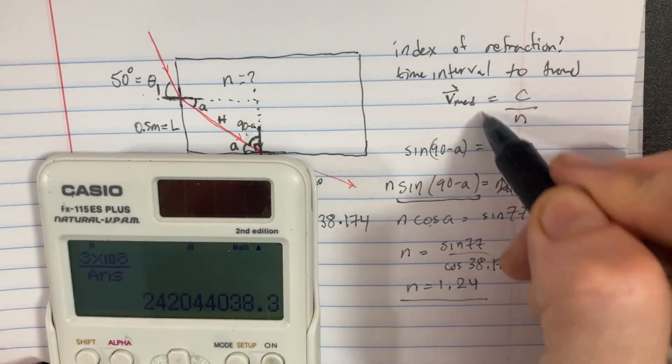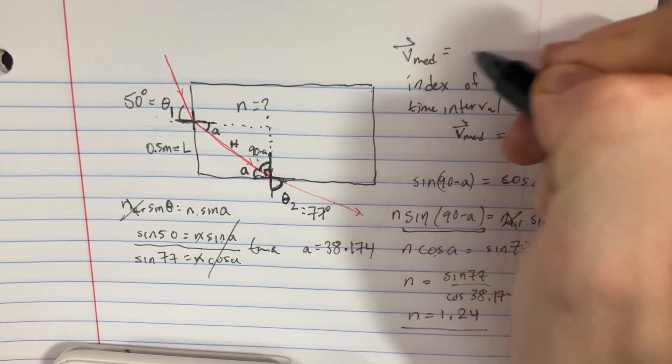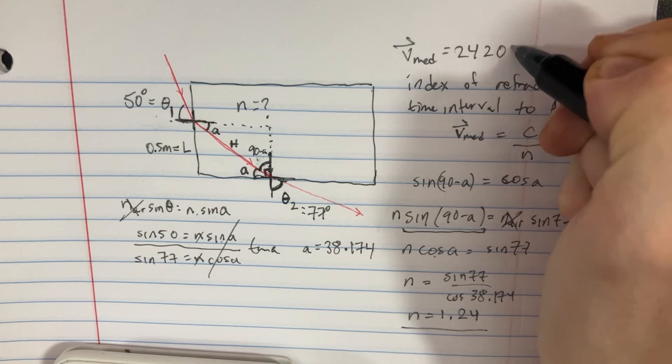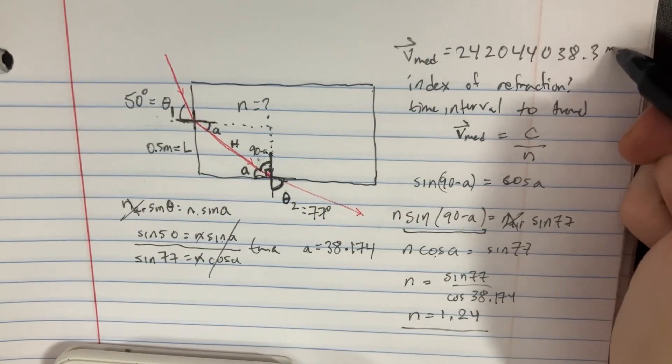So we could take 3e to the 8 divided by our answer, and we get this pretty fast velocity here. So we can say the v in the medium is 2.42044038 times 10^8 meters per second.